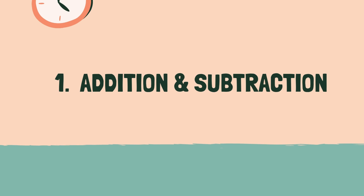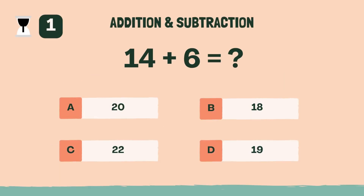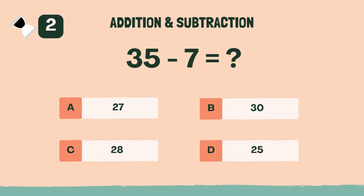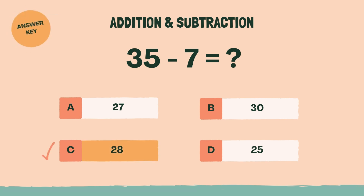Category 1: Addition and Subtraction. 3, 2, 1, go! What is 14 plus 6? A, 20. What is 35 minus 7? C, 28.